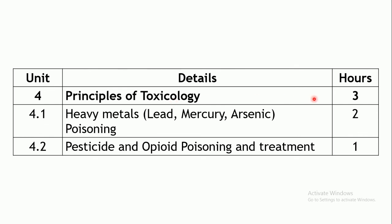The last unit is principles of toxicology, carrying 3 hours. You will study heavy metal poisoning — lead, mercury, and arsenic — including symptoms and treatment. Two hours are allotted for heavy metal poisoning, and one hour for pesticide and opioid poisoning and their treatment.